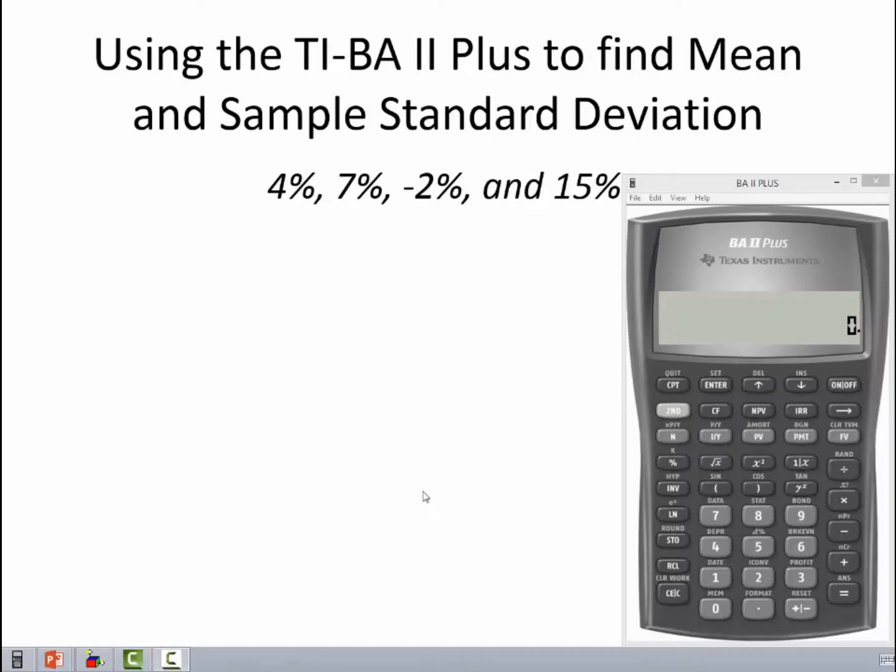Let's use our TI-BA II Plus to find the mean and sample standard deviation for our sample of returns. The first thing we want to do is hit the second key and then the number 7. Notice that the number 7 says data right above it.